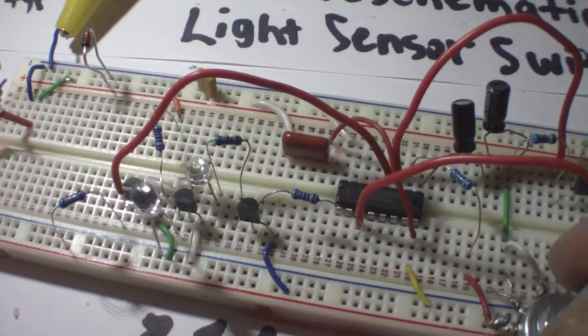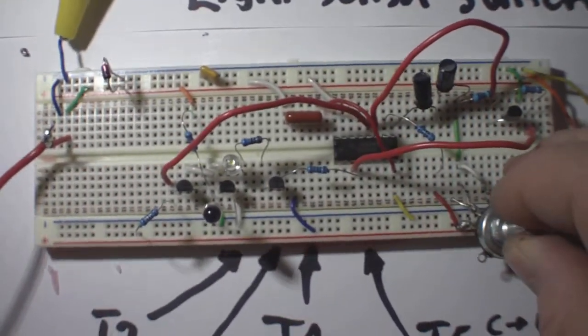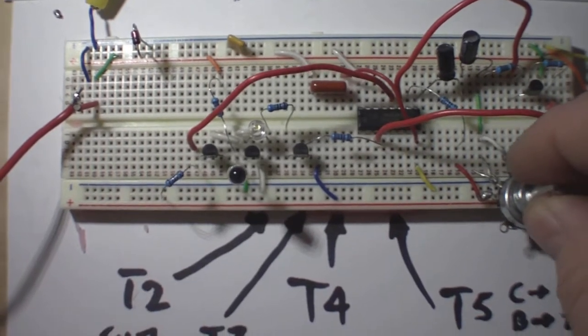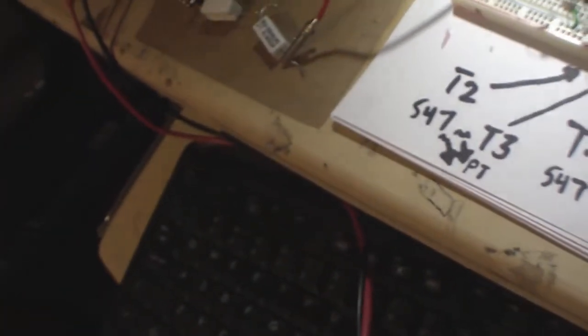Yet when I adjust my potentiometer under no circumstances can I get that thing to like kill all the root. See what should happen is that LED should come on in the dark and then stay on for a set amount of time basically.